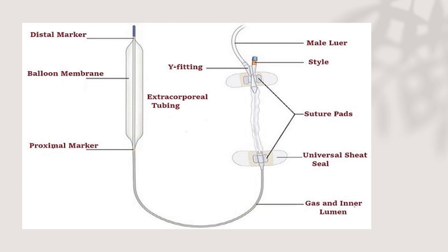The catheter is composed of two parts: the extrabody part — outside the body beyond the universal sheet seal — and the intrabody part. The intra-aortic balloon catheter uses a double-lumen catheter design: a vascular shaft that slides over the guide wire using the Seldinger technique, and a polyurethane cylindrical balloon. The balloon is 20 to 30 cm in length and 30 to 50 mL in volume, inflated by helium connected to the helium cylinder.